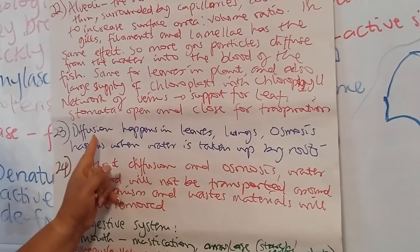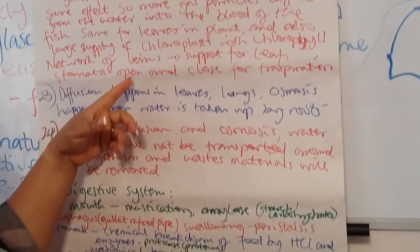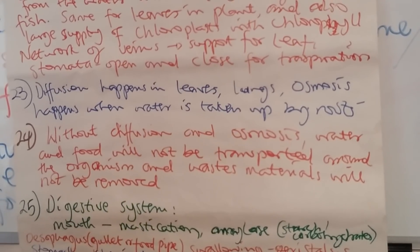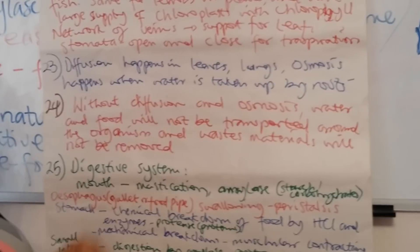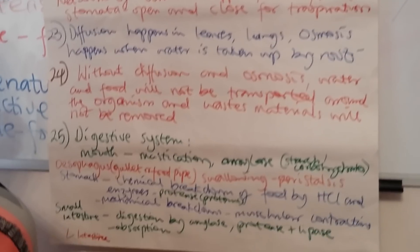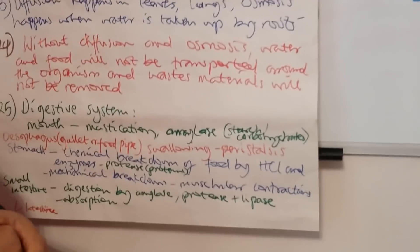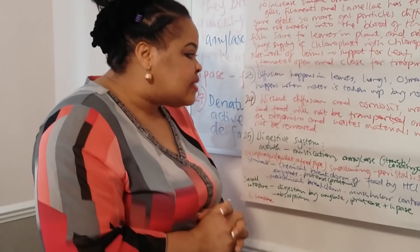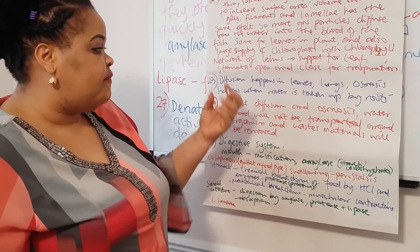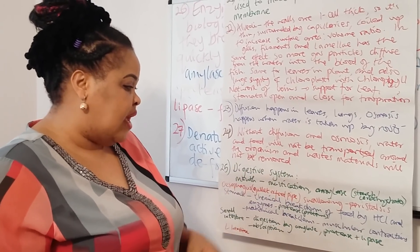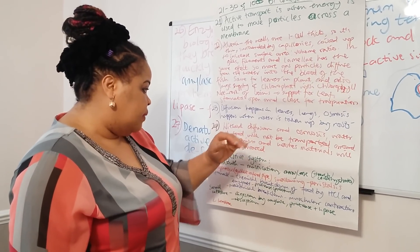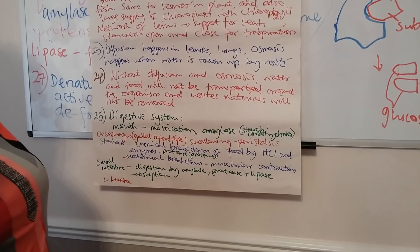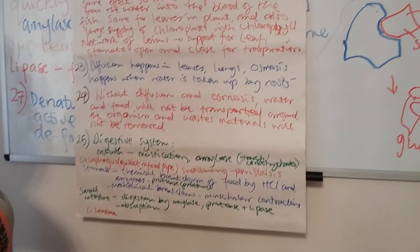Diffusion happens in leaves and lungs. Osmosis happens when water is taken up by roots. This question asks why diffusion and osmosis are important: without them, water and food would not be transported around the organism. For example, photosynthesis happens in the leaves, so without an efficient transport system there would be no translocation — the movement of food around the plant — and no movement of water from the roots to all parts. Diffusion and osmosis are also essential for removing waste materials.